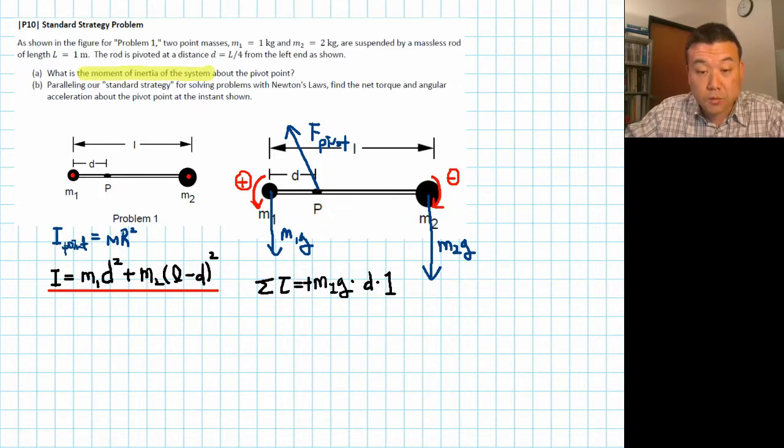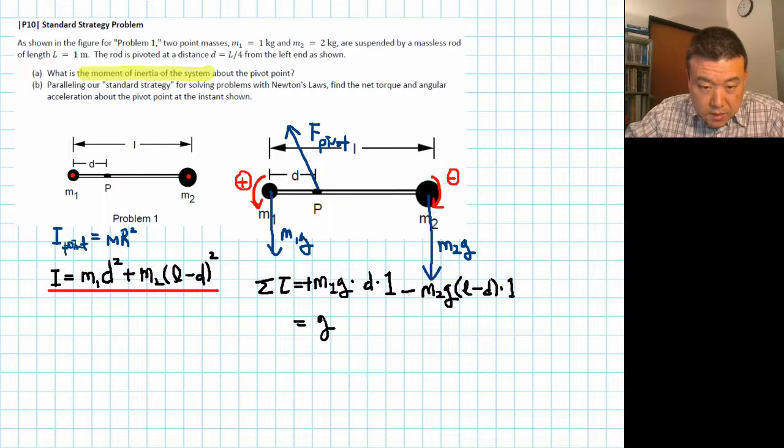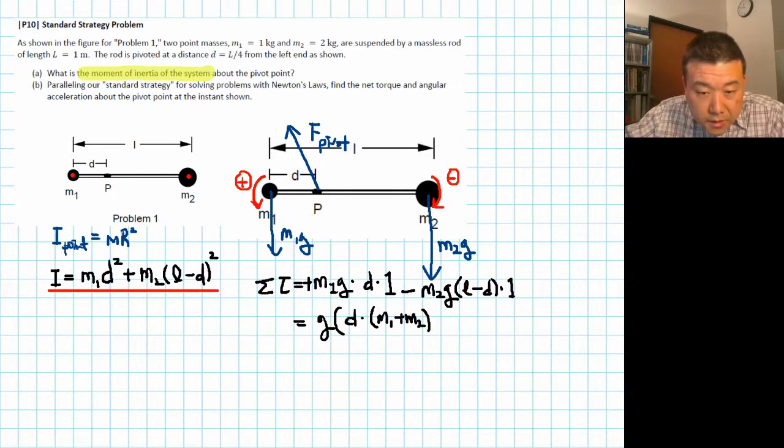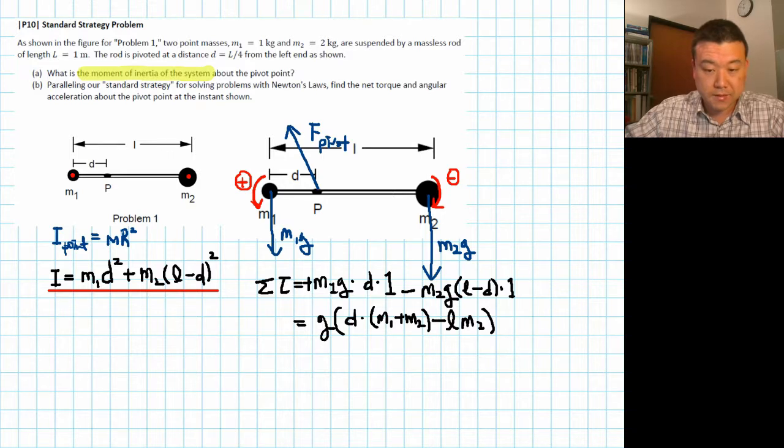I can factor out some stuff. So it would be G times, and I think I can factor out D. So D times M1 minus M2 times L minus D. Wait, let me write it as D times M1 plus M2 L. The second term is minus M2L. So that's the net torque. That's one half of the answer. This is the net torque.